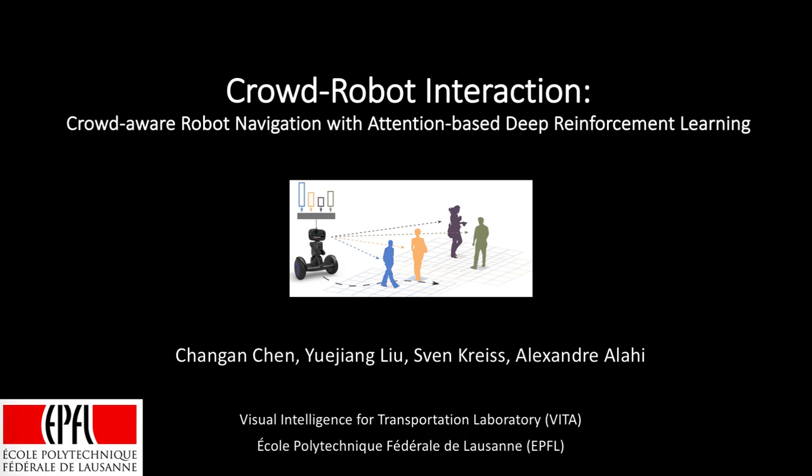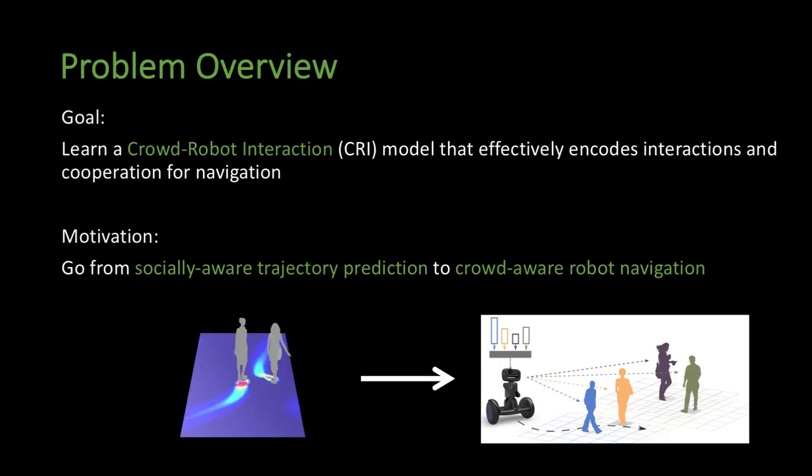In this video, we introduce a crowd-robot interaction model for developing a crowd-aware navigation policy with an attention-based deep reinforcement learning method. The goal of our work is to develop a crowd-robot interaction model that can effectively encode interactions and cooperation for navigation.